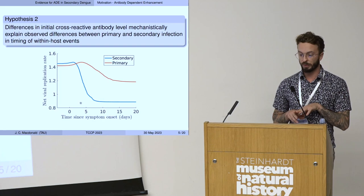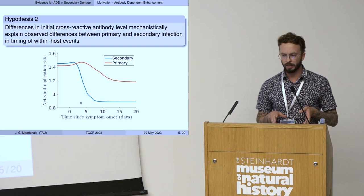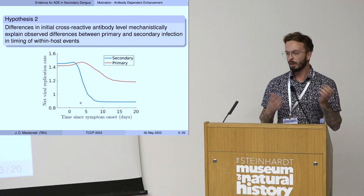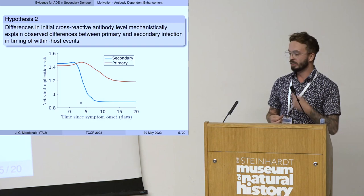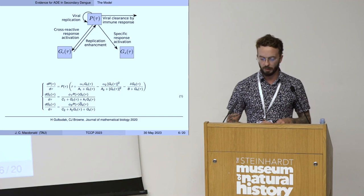Another hypothesis we're going to look at concerns empirically observed differences in the time course of events in primary and secondarily infected dengue patients. We're going to examine whether this difference — when peak viral load occurs, how long until the virus is cleared, the duration of viremia — is directly attributable to the difference in cross-reactive antibody level at the time of infection. To do this, we're going to make use of a mathematical model.